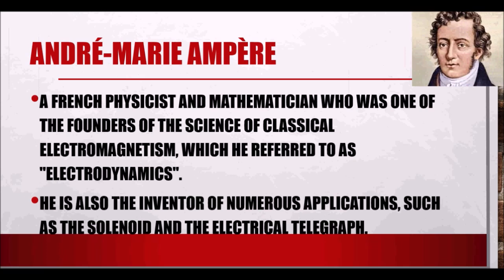Then we have André-Marie Ampère, a French physicist and mathematician who was one of the founders of the science of classical electromagnetism, which he called electrodynamics. He invented numerous applications such as the solenoid and the electrical telegraph, and focused on electromagnetism — the phenomenon where electricity and magnetism are combined as one physical phenomenon. From his name we get the unit of current: the Ampere.